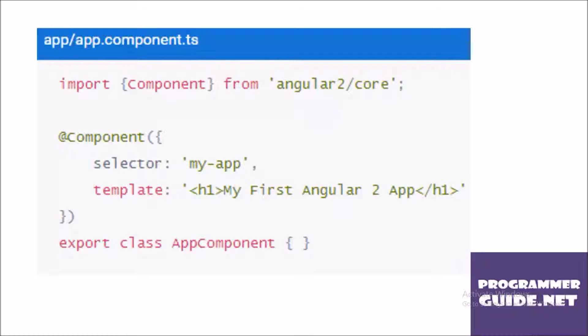Our template is a single line of HTML announcing my-first-angular-app. A component class controls the appearance and behavior of a view through its template. Here, the app component class is empty because we don't need it to do anything in the Quick Start. We just displayed my-first-angular-app that was written in the template.